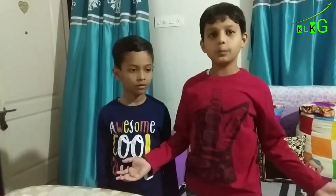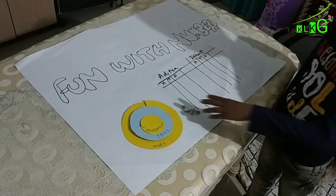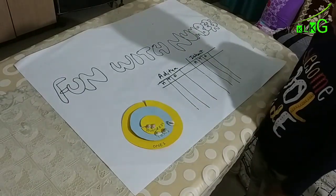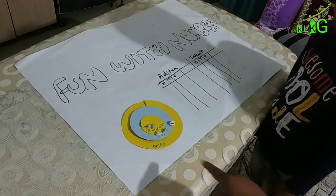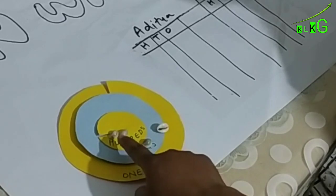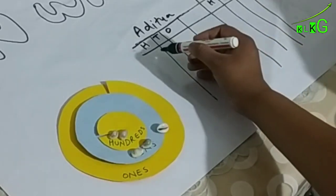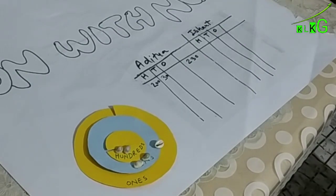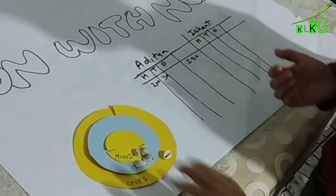Let's see how to play. Now Aditya will throw Kodi on this circle. Now you can see he got two hundreds and three tens. It means he got two hundred and thirty points.